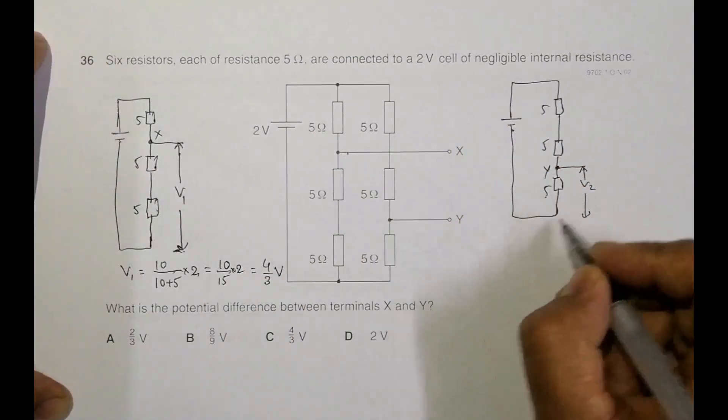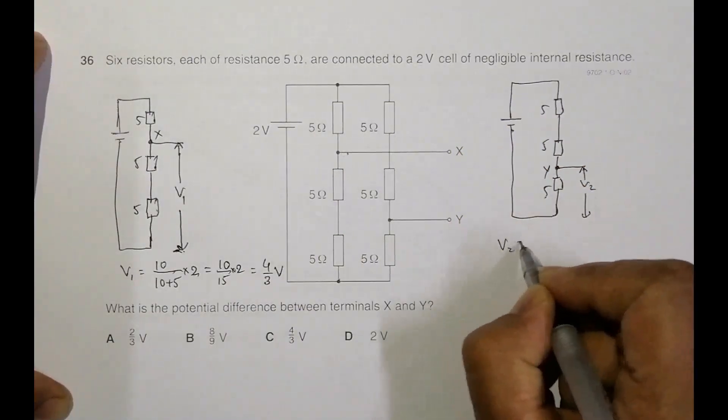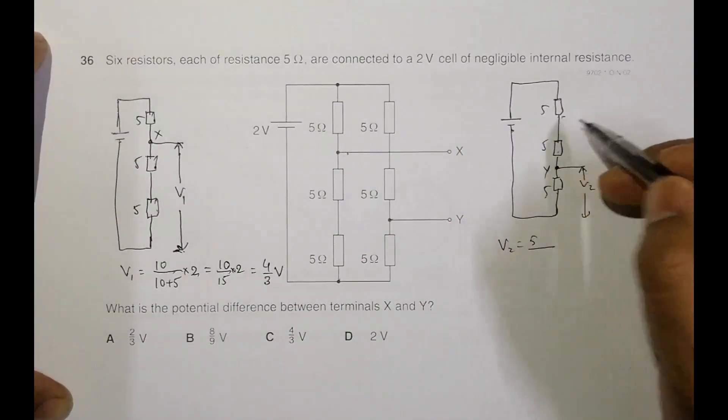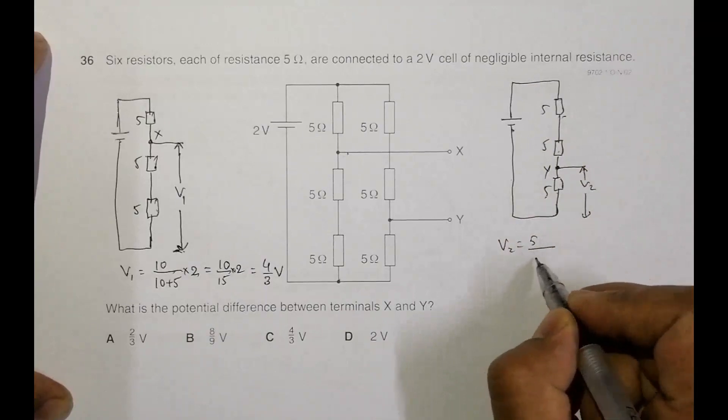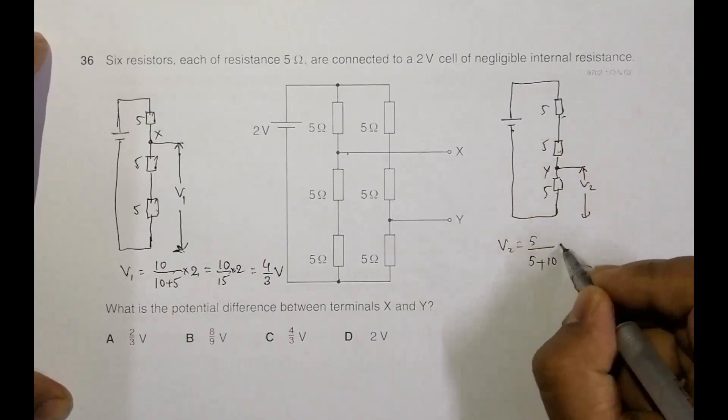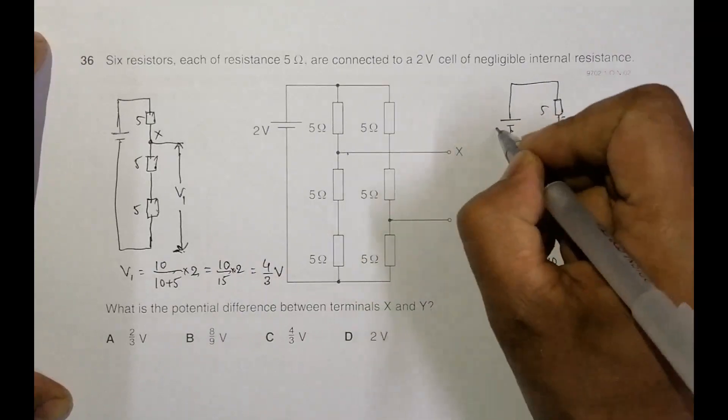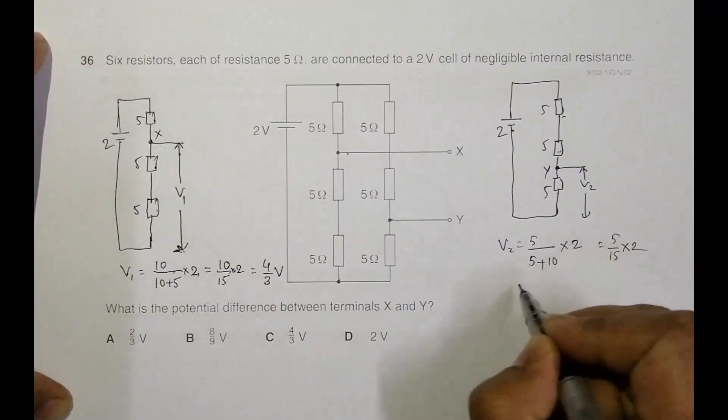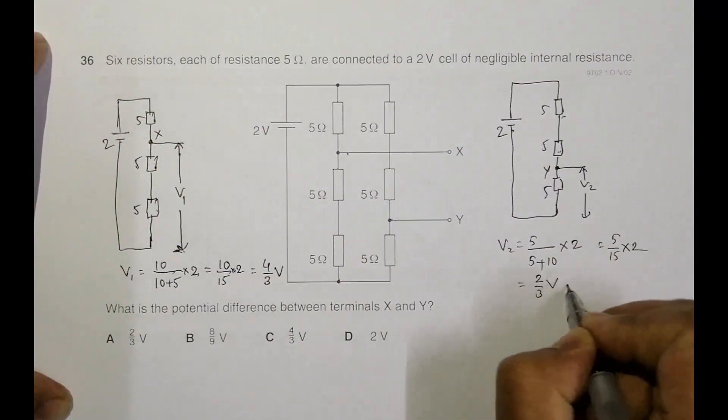And here, we have, so this is 5 ohm. So we have V2 is equal to 5 by 5, plus 5 plus 5, so it's 15 actually. So it is 5 plus, this thing is 10, into this 2. So this is 2. So it will be equal to 5 by 15 into 2, equal to 5 to the 15, it is 2 by 3 volt.